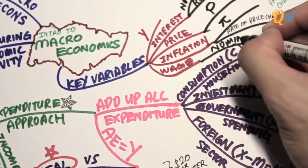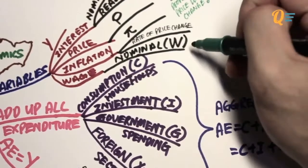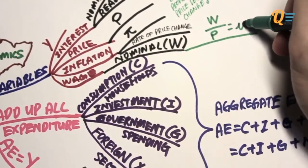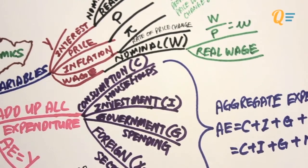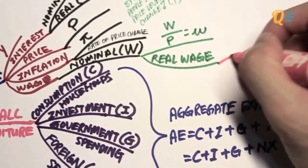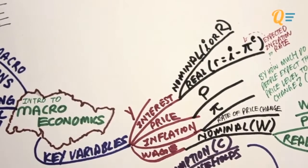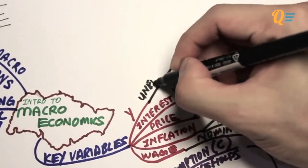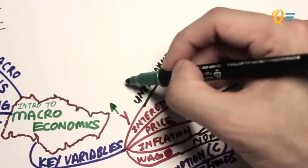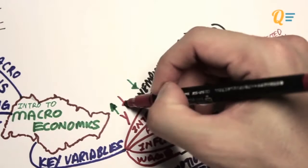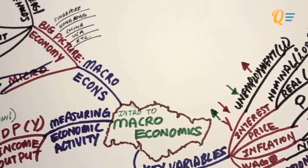Wages also come in nominal form (capital W) and real form. Real wage equals nominal wage divided by price level (denoted by small 'w'). The real wage determines the level of labor supply. The last variable is the level of unemployment (capital U). There is an inverse relationship between output and unemployment: higher output means lower unemployment, and lower output means higher unemployment.